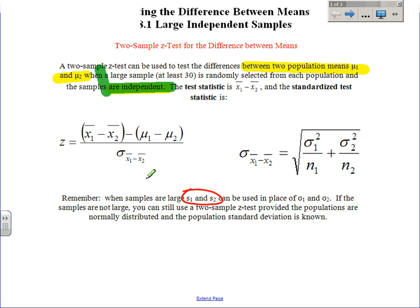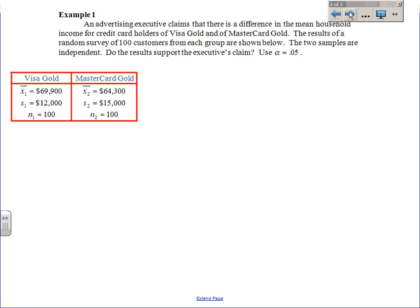Again, remember when samples are large, it is okay to use s₁ and s₂. If you don't know the actual variance, because what are the chances we know the actual variance? Slim. And if we knew the actual variance, we'd probably already know the actual mean and wouldn't have to compare them anyways, right? And so we're going to be using s a lot. Because you want to be able to use all sample information. That's the whole idea of these tests.